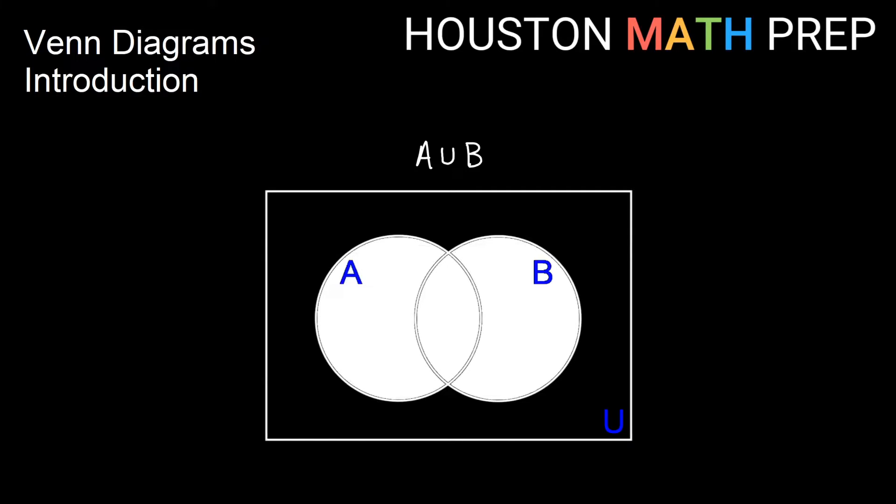And then if we think of the union of those two sets, A union B, remember that's all the elements in A or in B or in both. So these are all the elements in A over here. These are all the elements in only B over here. And then these are all the elements in both. So anything in any part of the circles A and B is going to be in the union of A and B.